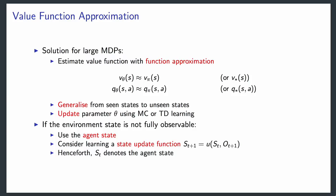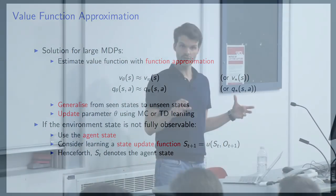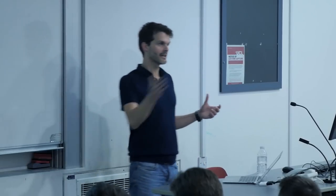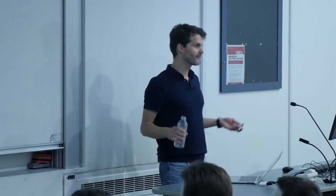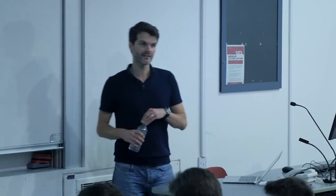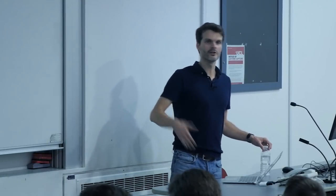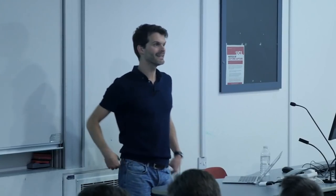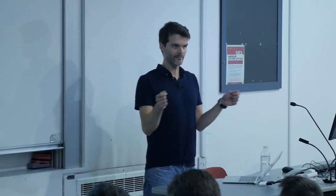Generalized policy iteration means you estimate the value of your current policy and then improve it—you don't have to fully improve it, just a little bit. You can interleave these steps quite fine-grainedly. We can do SARSA—learning on-policy about the current policy—or Q-learning, where we try to immediately learn about the greedy policy, basically interleaving policy evaluation and improvement on every step.